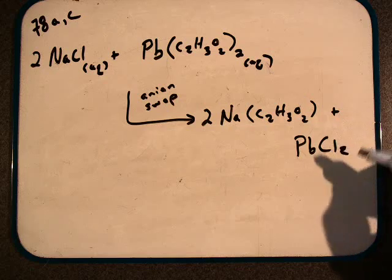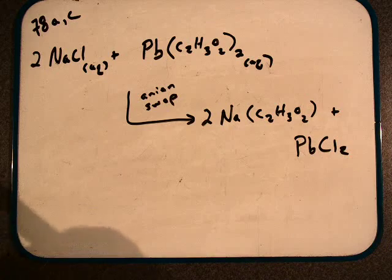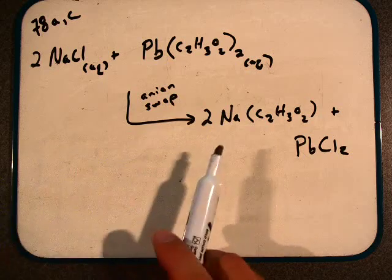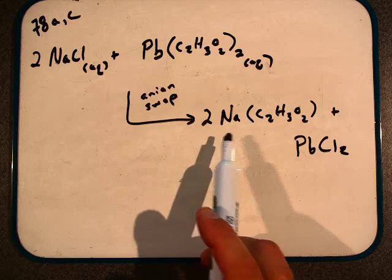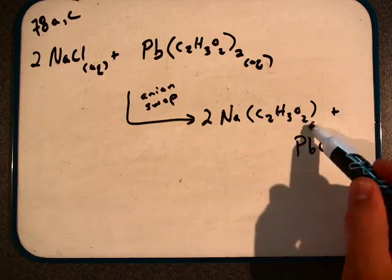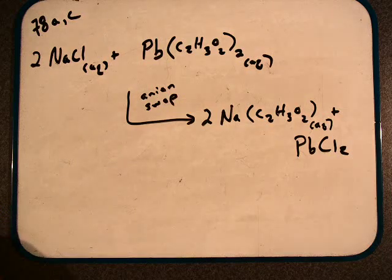We're not done yet. The question still remains about solubility. Are the products aqueous, or would they precipitate? Sodium, plus one, group 1A metal, always soluble. Acetates always soluble, no exceptions to the rule, so those are aqueous.